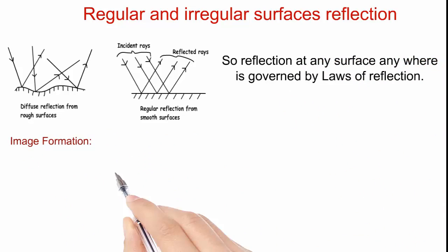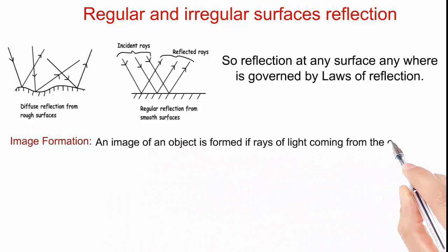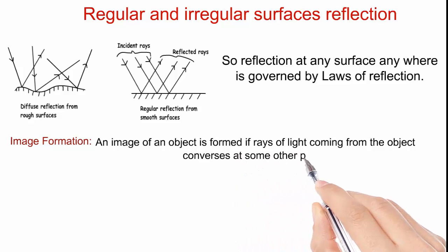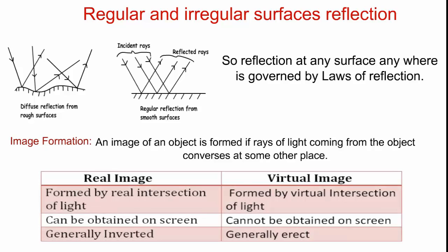Coming to the image formation. An image of an object is formed if rays of light coming from object converges at some other place. There are two types of images: real image and virtual image. Real image is formed by intersection of real light rays. It can be obtained on screen. Generally, real images are inverted.